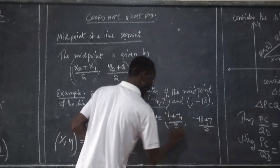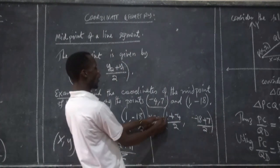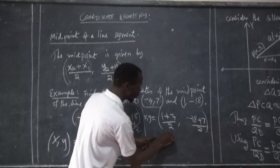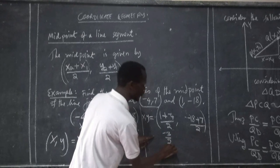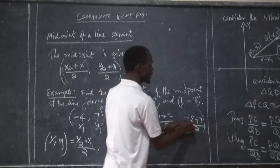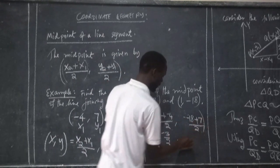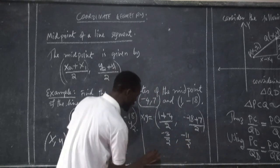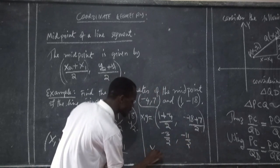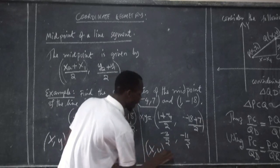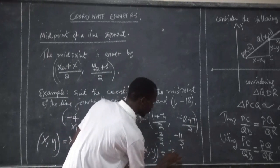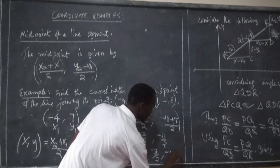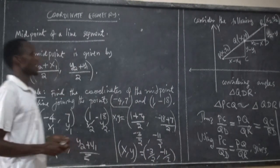From here we have: 1 plus negative 4, which equals negative 3 over 2, comma; negative 18 plus 7, which equals negative 11 over 2. So our midpoint X comma Y is equal to negative 3 over 2, comma negative 11 over 2. This is what we call the midpoint.